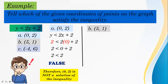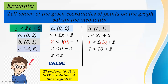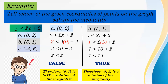For letter B, the point is (5, 1). Substituting into y less than 2x plus 2: y is 1 and x is 5, so we get 1 less than 2 times 5 plus 2, which gives 1 less than 10 plus 2, that is 1 less than 12. The statement is true because 1 is less than 12. Therefore, (5, 1) is a solution of the inequality.